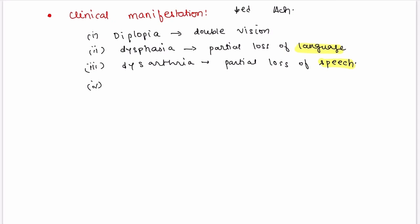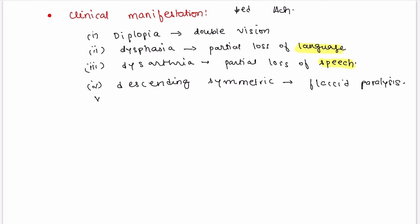The next clinical manifestation is flaccid paralysis of voluntary muscles, in descending symmetry — meaning the hands will be paralyzed first and then the legs. This is called descending symmetry. Additionally, deep tendon reflexes are decreased — all of this is due to the decreased acetylcholine.